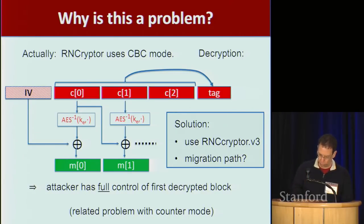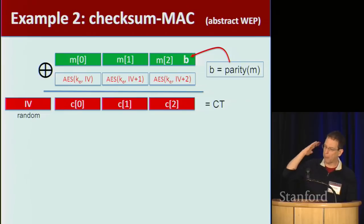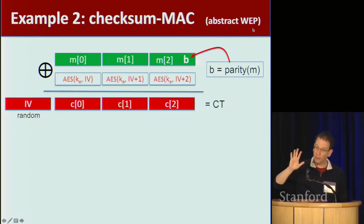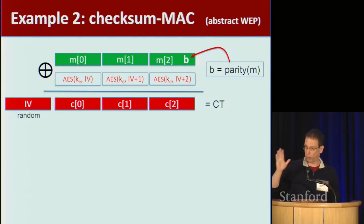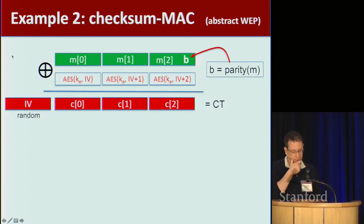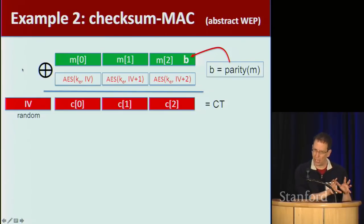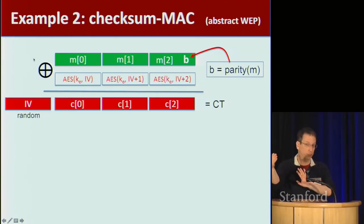The second example is actually a made-up example, but it's an abstract version of a problem that happened in my favorite protocol to pick on: WEP, the 802.11b encryption protocol. I love this protocol because they've pretty much made every possible mistake in the book. Every time I want to show an example of how not to do something, I use WEP. So let's see how WEP works abstractly and see if someone can figure out the attack. This is not exactly how WEP works, but this is a way for me to explain the attack — and we're going to build on this attack for another one coming in just a second.